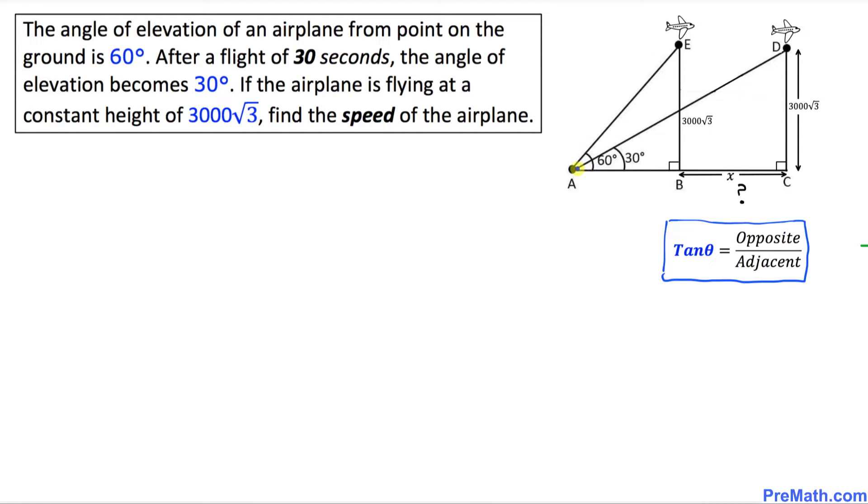In triangle ABE, let's calculate tangent of, over here you see our angle is 60 degrees. I'm going to write down tan(60°) equal to opposite over adjacent. In our case, our opposite side is 3000√3.